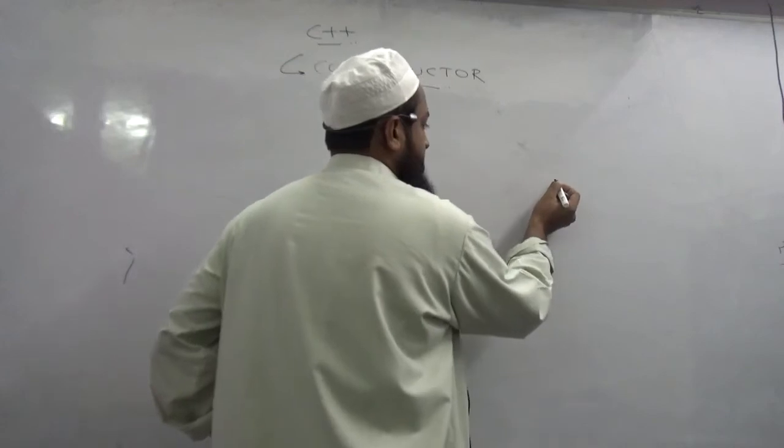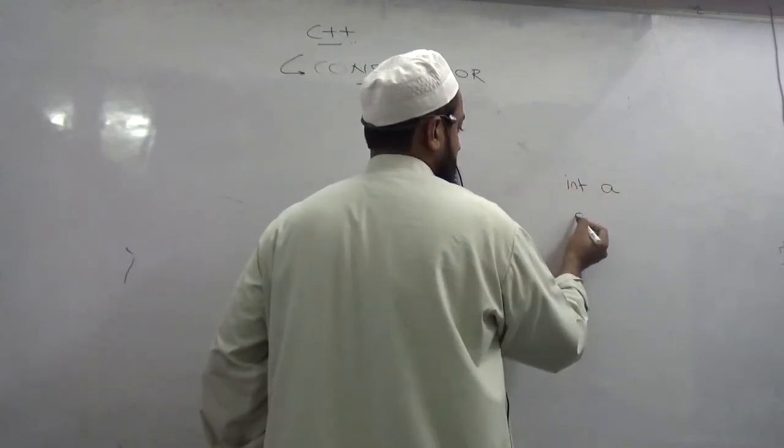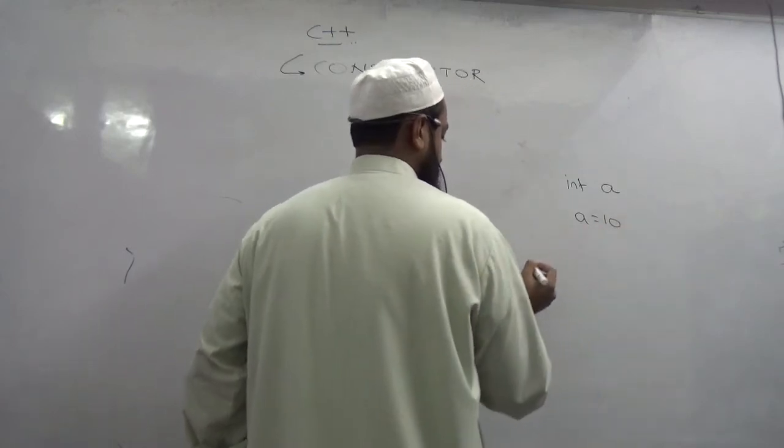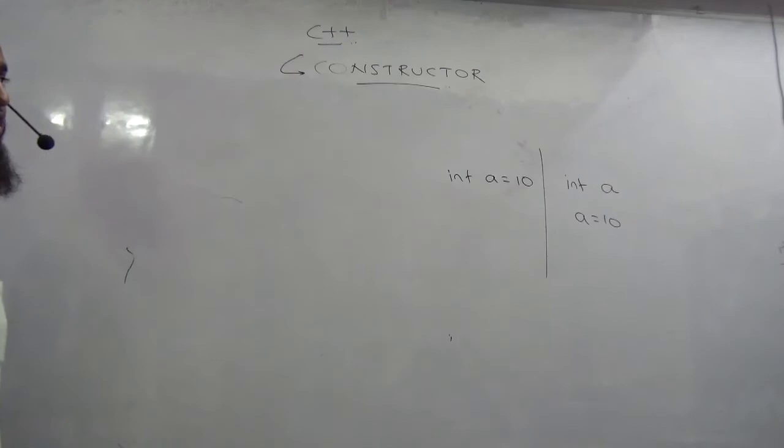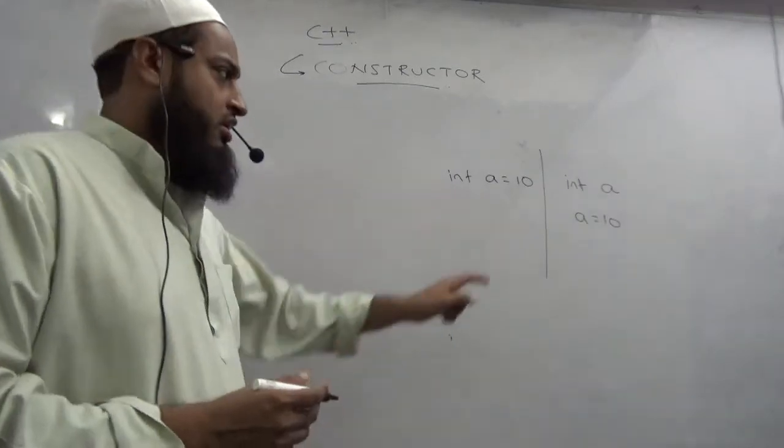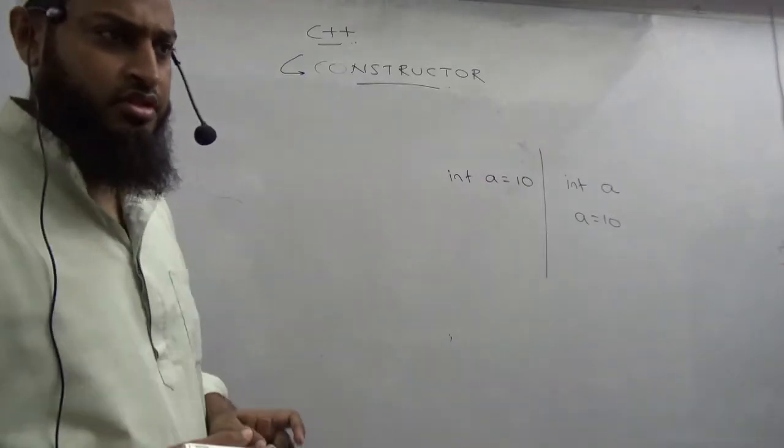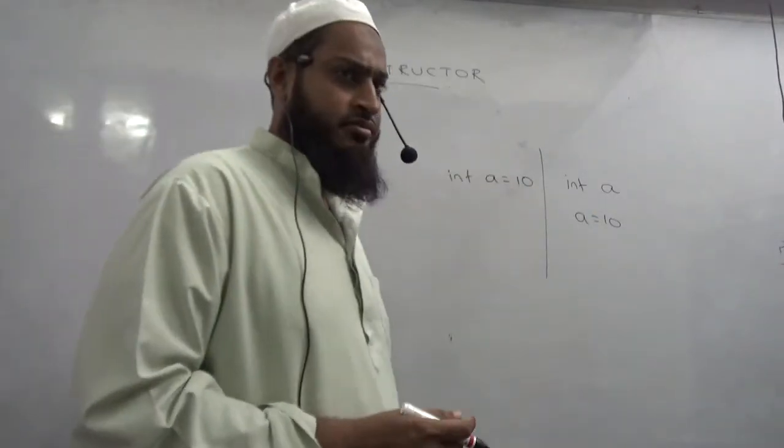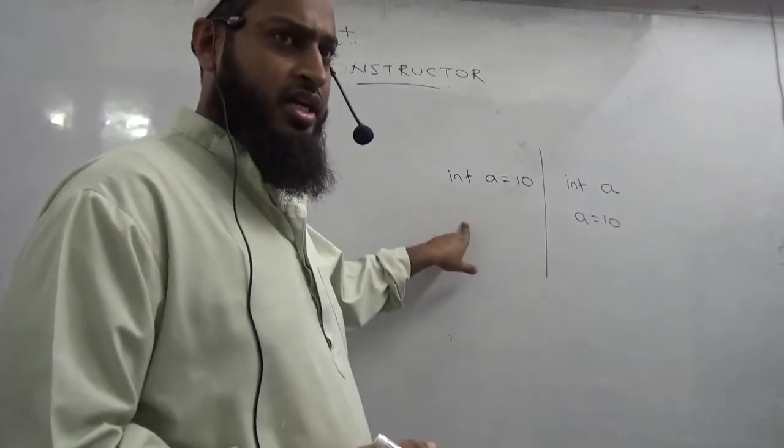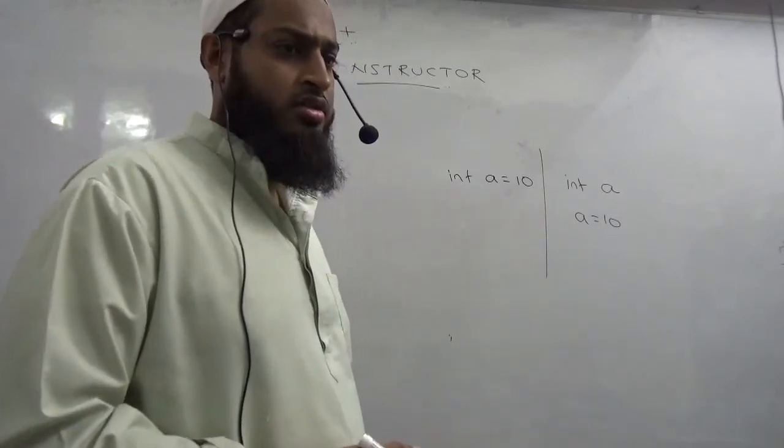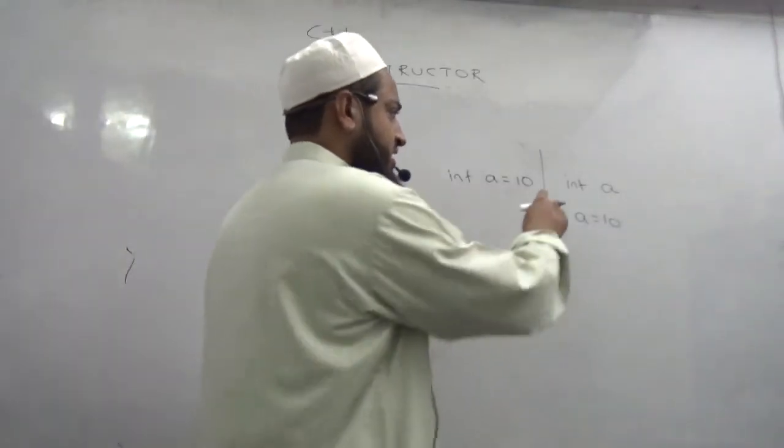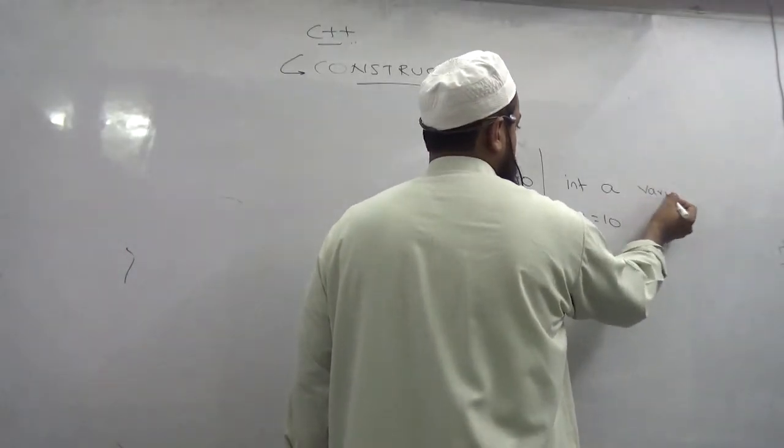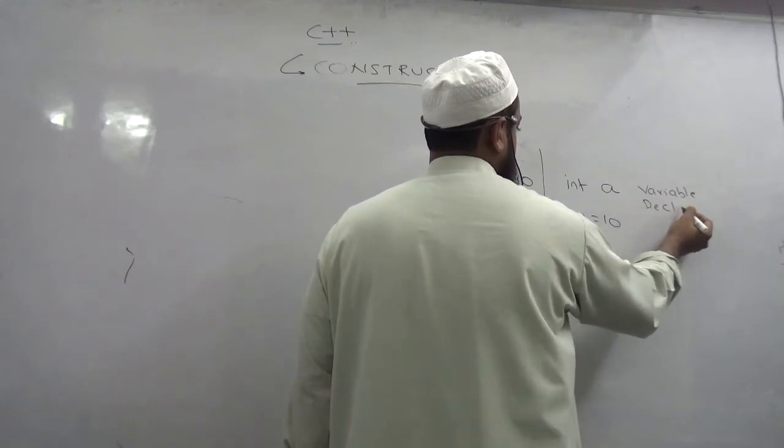Can you spot the difference between these two things? Let's take simple C concepts. What is the difference between this and this? This is variable declaration. What is this? Variable declaration. You are declaring the variable, right.